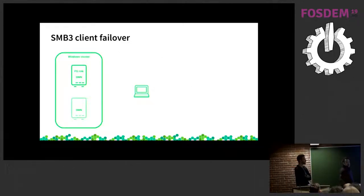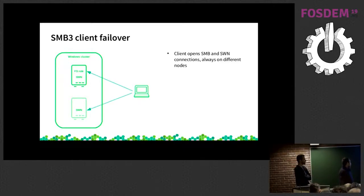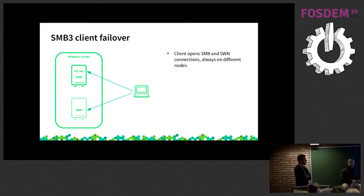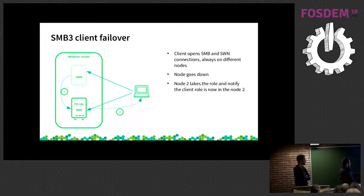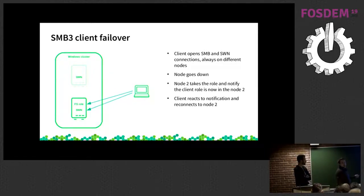In an SMB3 cluster, all nodes run the witness service, and the client opens two different connections — importantly, always to two different nodes. When the node holding the file server role crashes, two things happen: the cluster moves the role to another server, and the witness service tells the client about this movement, so the client can react and automatically reconnect to the other node.